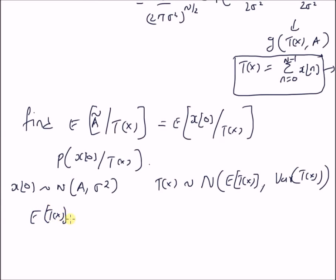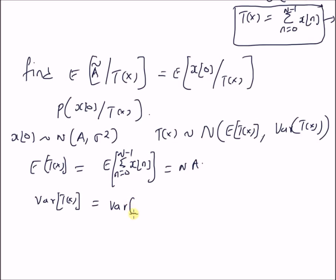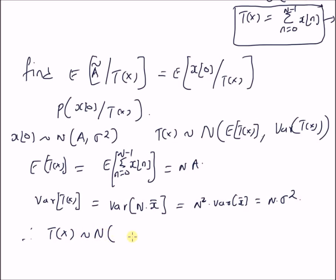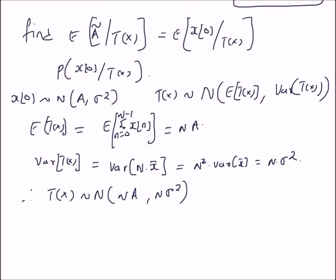The expectation of T(x) equals the expectation of sum_{n=0}^{N-1} x(n), which is clearly equal to N times A. The variance of T(x) equals N squared times the variance of the sample mean. Since the variance of the sample mean is sigma squared over N, the variance of T(x) is N times sigma squared. Therefore, T(x) follows a Gaussian distribution with mean N*A and variance N*sigma squared.